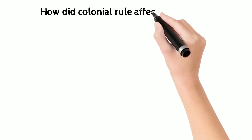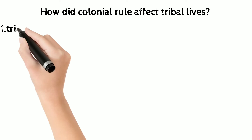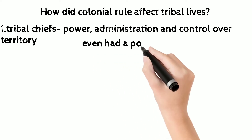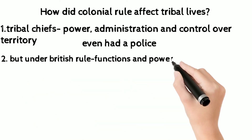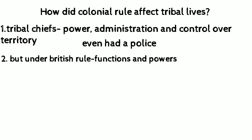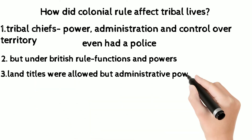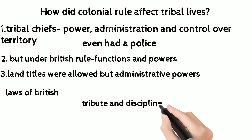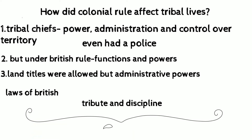How did colonial rule affect tribal lives? First, let's see how it affected tribal chiefs. Tribal chiefs had power, administration, and control over their territory — they even had police stations. But under British rule, their functions and powers were restrained. They were allowed land titles over a large area, but their administrative powers were lost. They had to follow British laws, pay tribute to the British, and discipline tribals on behalf of the British.